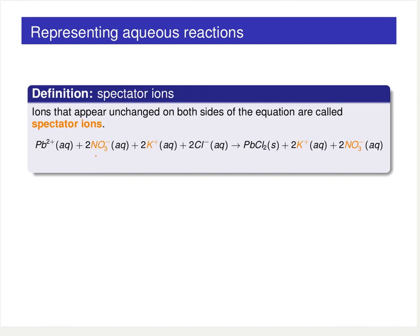If we look at this complete ionic equation more closely, we can see that the NO3⁻ nitrate and potassium show up on both the reactant and product side, which means they're not really doing anything. They're just hanging out in solution watching the actual chemistry occur — the actual chemistry involves lead and chloride coming together to form the solid product. These ions that are just sitting around in solution — we call them spectator ions. Ions that appear unchanged on both sides of the equation are called spectator ions.